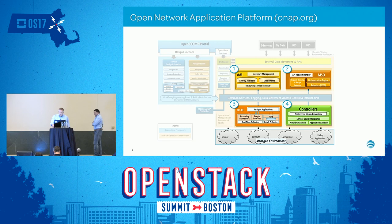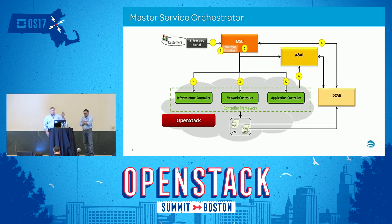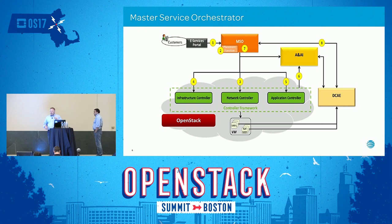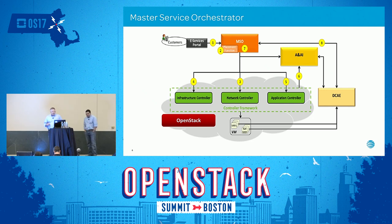Let's dive into the Master Service Orchestrator. Our VNF has been described in a heat template and gets passed to MSO, which does the automated deployment. Network controllers, infrastructure controllers, and application controllers get deployed so we can control our VNF. Information is then fed through the DCAE component, and the Active and Available Inventory is updated so we have accurate information about what's happening in our environment. We now have a closed-loop scenario and can take actions based on how the VNF has been deployed.